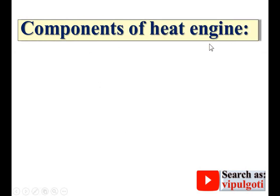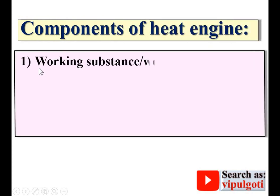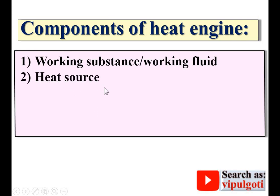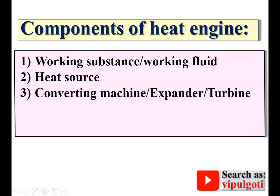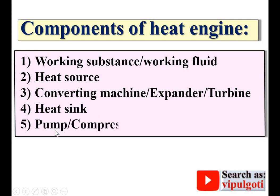Now the components of heat engine — there are five important components. First is the working substance, sometimes known as working fluid. Second is the heat source. Third is the converting machine — generally in a power plant that is a turbine, where steam expands, so it is sometimes known as an expander. Fourth is the heat sink. Fifth is the pump, which can sometimes be a compressor.